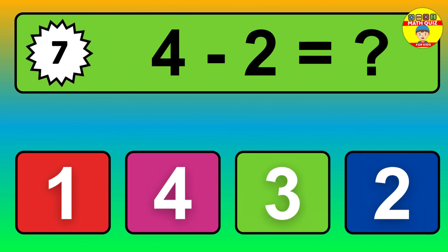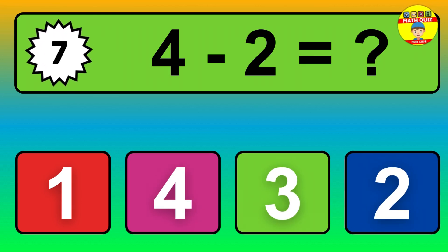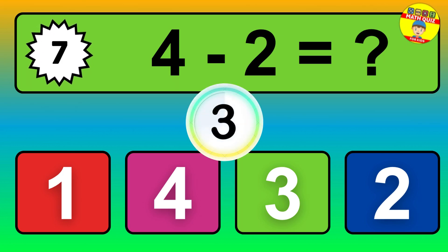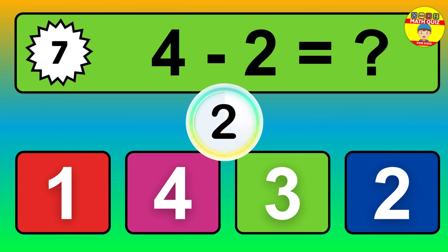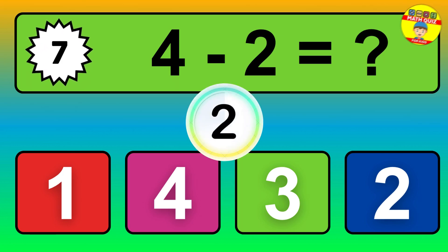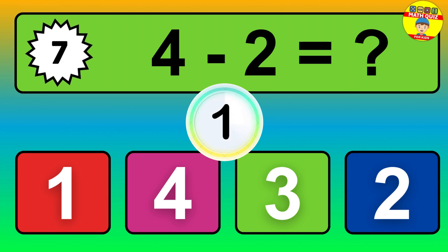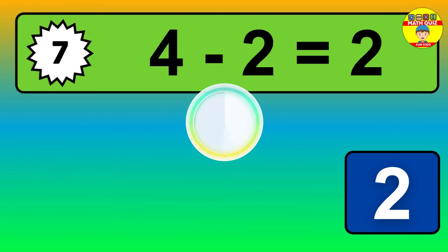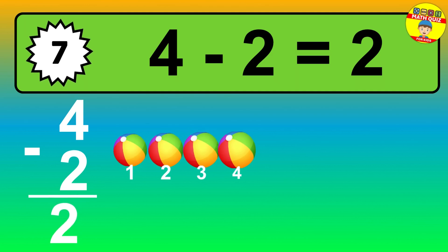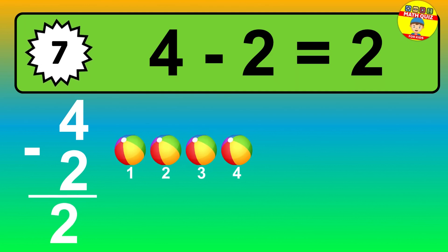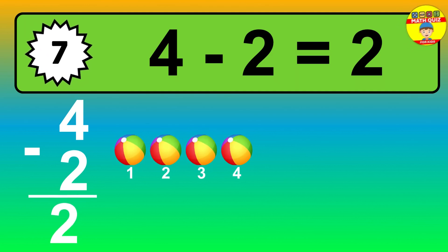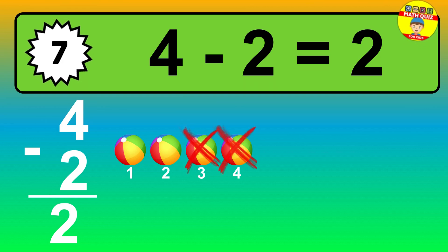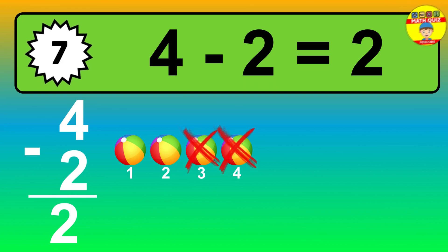Question 7. 4 minus 2 equals what? The answer is 4 minus 2 is 2. Let's count it. 1, 2.